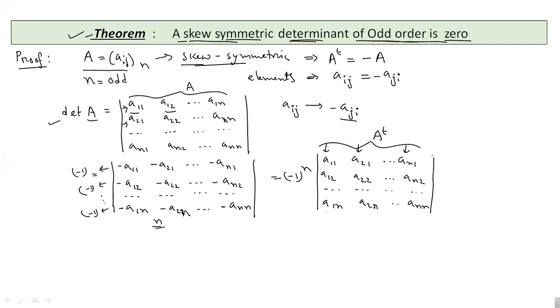So, we can see that this is the determinant of A transpose. Now, since our n is odd, so this is minus 1. And this is our determinant of A transpose.